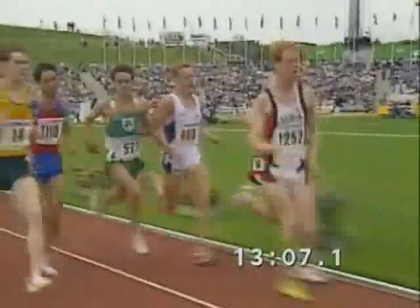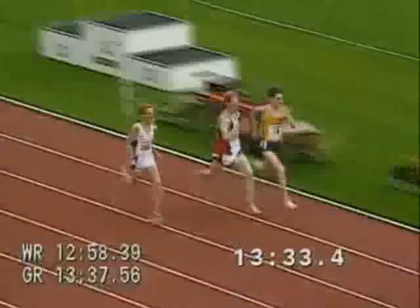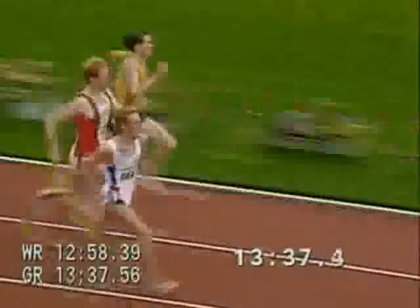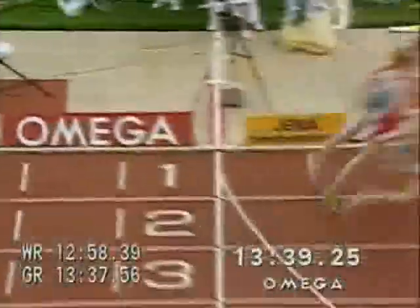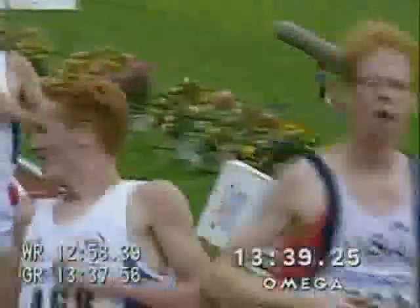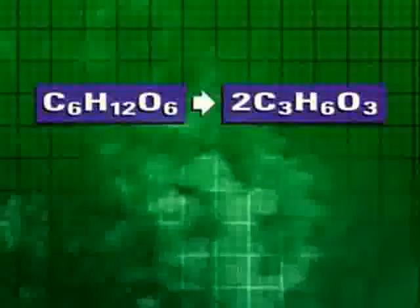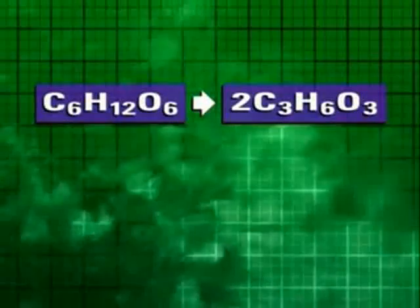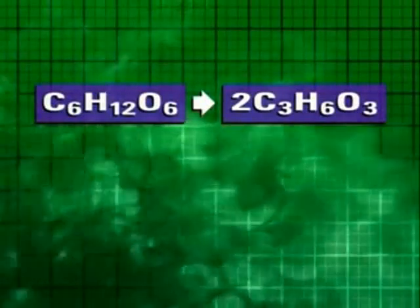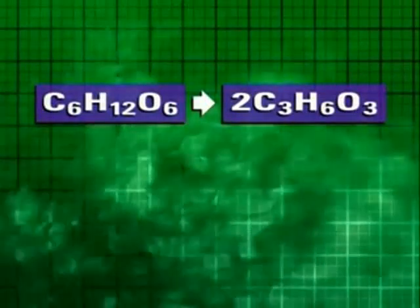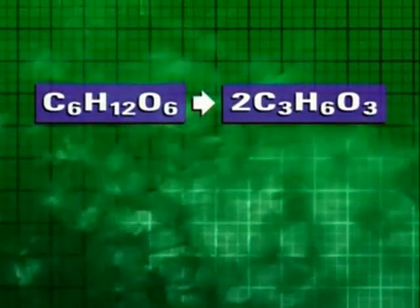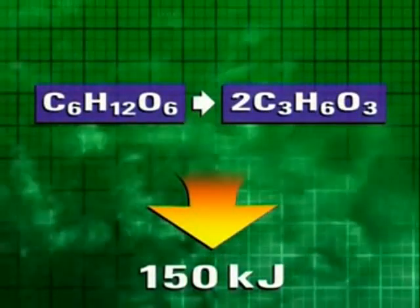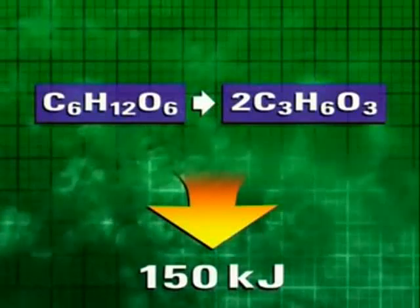When an athlete is running at full speed, the muscles can demand more oxygen than the body is able to provide. When this happens, the respiration reaction becomes anaerobic instead of aerobic. In the absence of enough oxygen, the body breaks down glucose into lactic acid instead of carbon dioxide and water. This anaerobic reaction releases energy, but not as much as aerobic respiration.